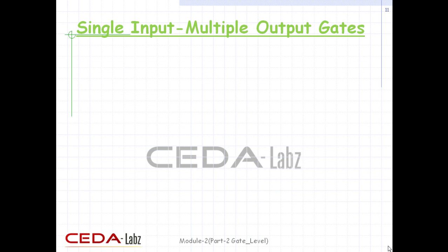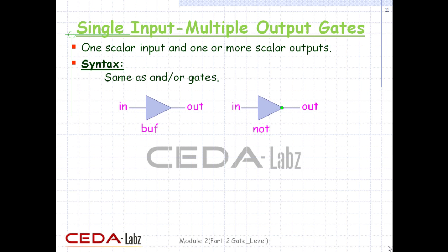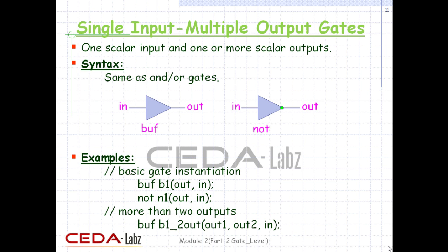Single-input multiple-output gates have one scalar input and one or more scalar outputs. The last terminal in the port list is connected to the input, and other terminals are connected to the outputs. Two basic single-input multiple-output gate primitives are provided in Verilog: buf and not. Notice that these gates can have multiple outputs but exactly one input, which is the last terminal in the port list.